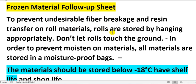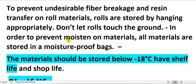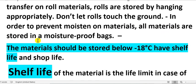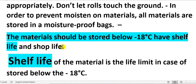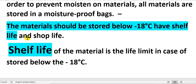Raw material rolls are stored by hanging appropriately — do not let rolls touch the ground — in order to prevent moisture on materials. All materials are stored in a moisture-proof bag. The material should be stored below minus 18 degrees centigrade for shelf life purposes.